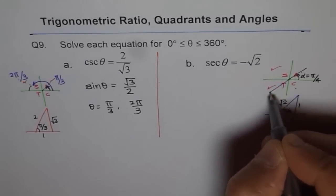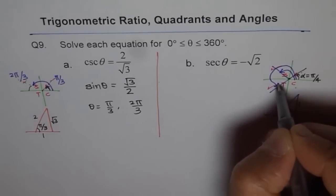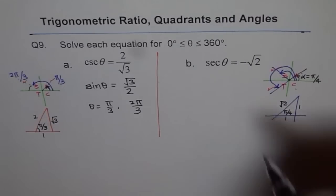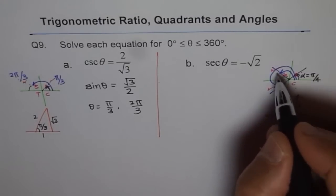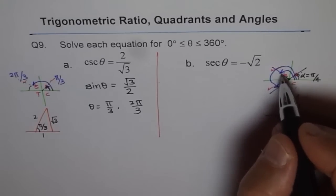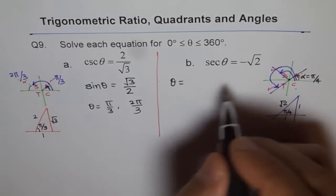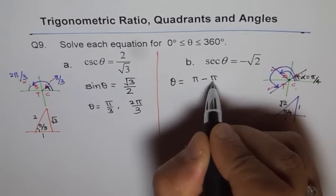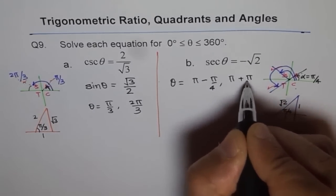So the solutions are, one is this and the other one is this. And these are, this one is pi plus pi by 4 and this one is pi minus pi by 4. So these are the two solutions. So theta equals to pi minus pi by 4 and pi plus pi by 4.